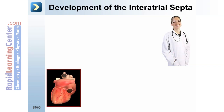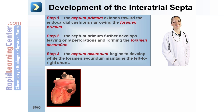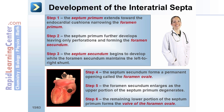In contrast, the development of the interatrial septum takes place in six steps. Step one: the septum primum extends toward the endocardial cushions, narrowing the foramen primum. Step two: the septum primum further develops, leaving only perforations, forming the foramen secundum. Step three: the septum secundum begins to develop while the foramen secundum maintains the left-to-right shunt. Step four: the septum secundum forms a permanent opening called the foramen ovale. Step five: the foramen secundum enlarges as the upper portion of the septum primum degenerates. Step six: the remaining lower portion of the septum primum forms the valve of the foramen ovale.